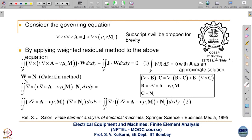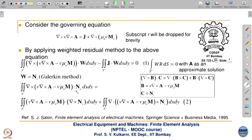Here again we use Galerkin's approach — we take the weighting function as the shape function, the only difference being that here it is a vector: capital bold W and bold N_i. Now this first term we are taking — we use a vector identity where B is this term and C is N_i. Using this vector identity, the expression is split into two.